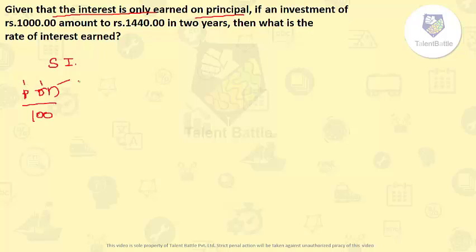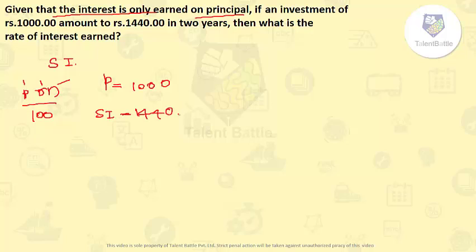From the given information: principal amount P is 1,000. The investment amounts to Rs 1,440, so the simple interest earned is 1,440 minus 1,000, which is Rs 440. The number of years N is 2.